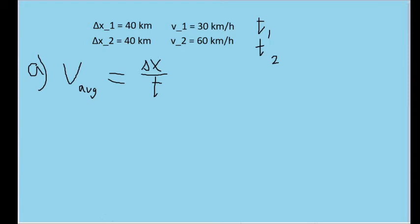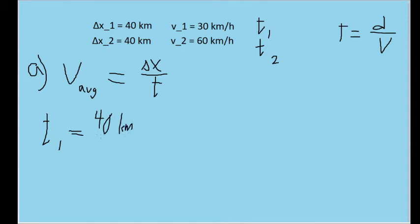The time of a motion is equal to the distance traveled divided by the speed. So we'll calculate this for each segment of the automobile's motion. For t sub 1, this is equal to the change in position in the first part of the problem — 40 kilometers — divided by v sub 1, the speed at that part, so 30 kilometers per hour. This is equal to about 1.33 hours.